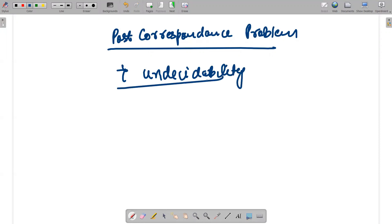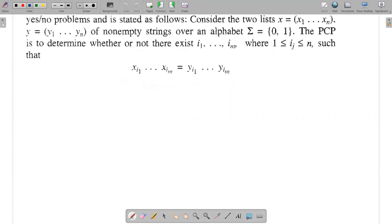What is undecidability? Undecidability means there is no procedure to find out whether a solution exists or not. So I'll just take you to the definition of this problem.